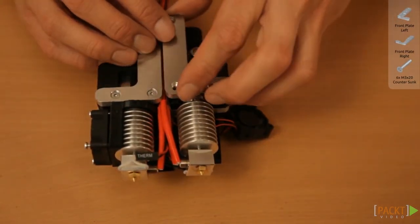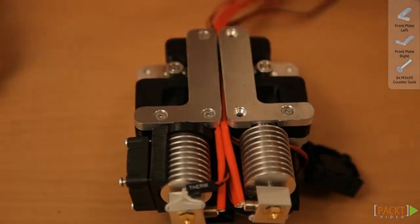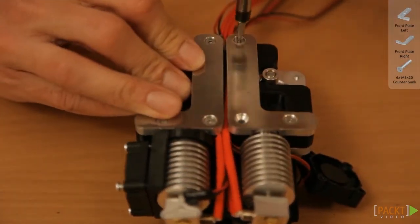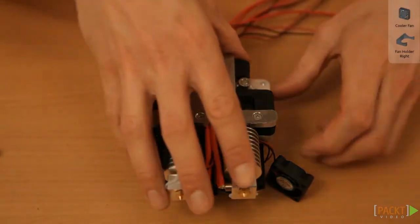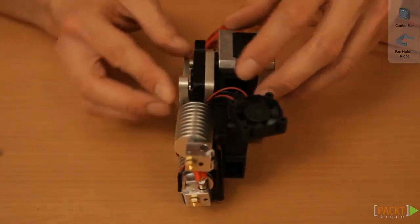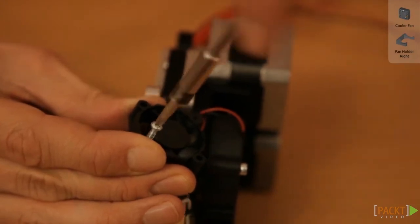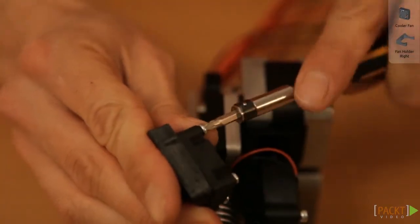Mount the right front plate. You'll also do this even if you only have a single extruder. Be careful that no wires get stuck in between. Fix the right hand cooler fan to the extruder unit.